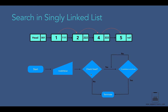If head equals null, it means we have not created a singly linked list, so we terminate the algorithm. Otherwise we loop through all nodes. While looping, we check if the node value is equal to the current node's value. If so, we terminate the algorithm and print a message saying the node is located at this position. Otherwise we continue looping until we reach the last node. If we reach the last node without finding the value, we print that the value does not exist in this singly linked list.